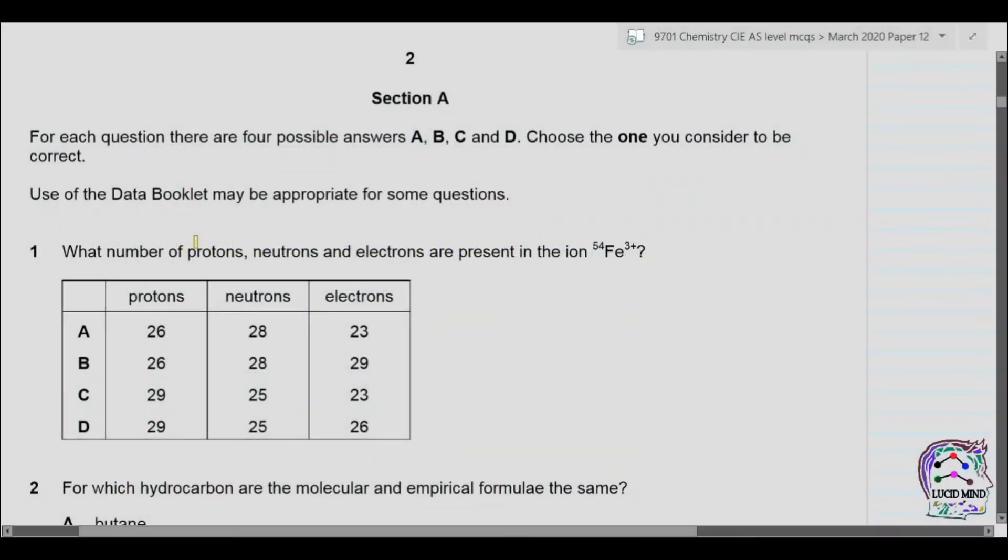Question number 1. What number of protons, neutrons and electrons are present in the ion Fe plus 3? Now the atomic number is not given, so we will be consulting periodic table. So from the periodic table, we come to know that the atomic number is 26. Mass number is 54. So the number of protons is 26.